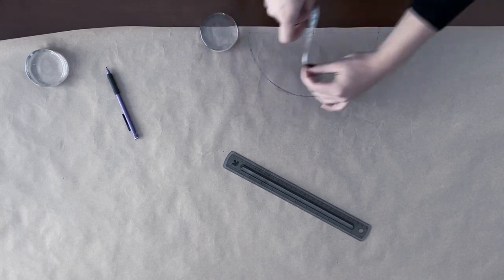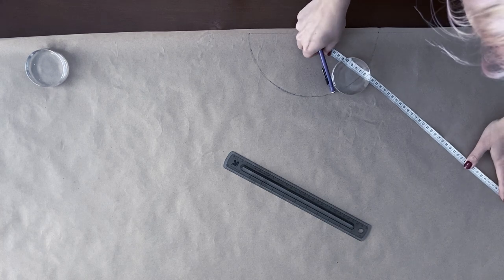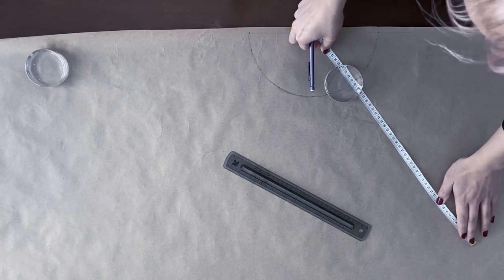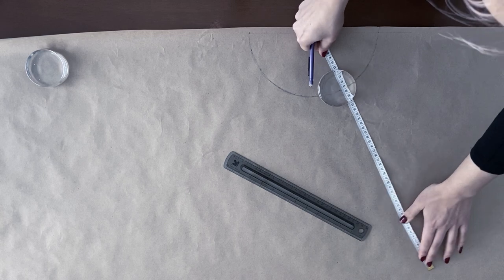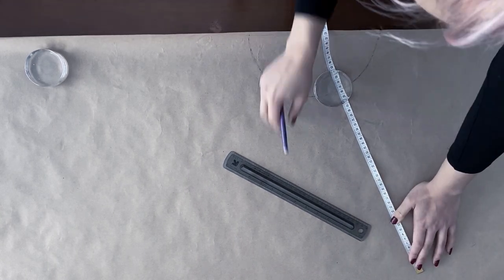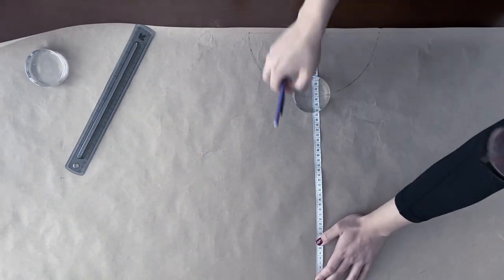Now for the length of the skirt you can add the length and the waist radius measurements together and use the same center point to draw the half circle for the length. Or you can just measure the wanted length starting from the half circle we just drew.